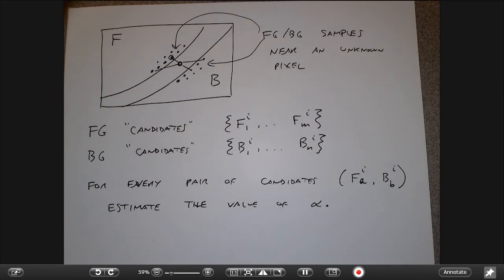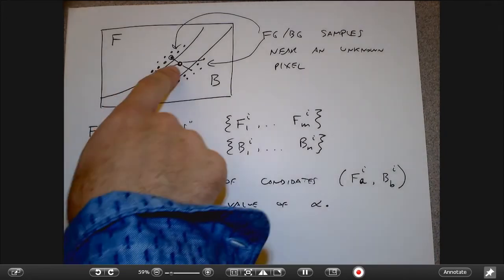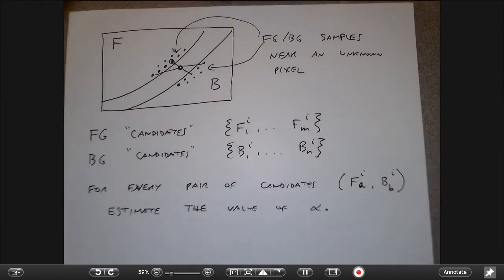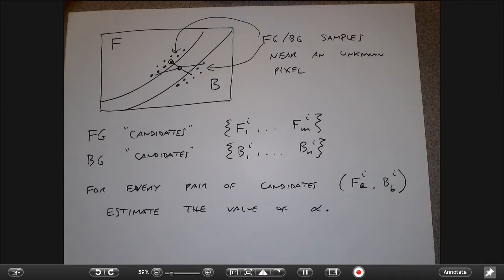The basic concept: for every unknown pixel, generate foreground and background samples, use those to initialize an alpha estimate as a PDF. Then take the initial PDFs for all unknown pixels, the known delta-function PDFs for foreground and background pixels, and turn the crank until things converge. Some details of how this works are fairly subtle and you'd need to go to the original research papers.